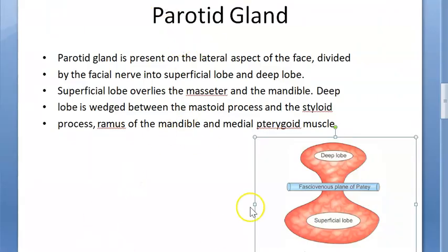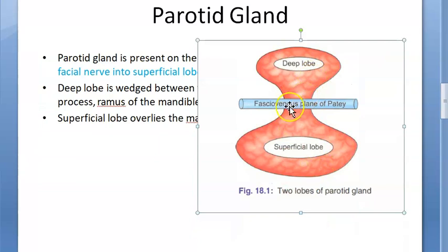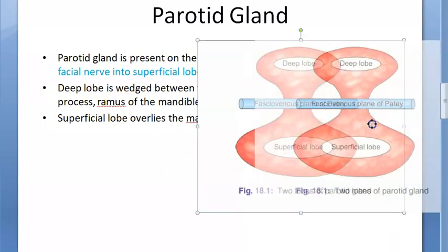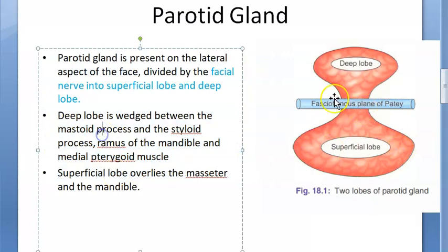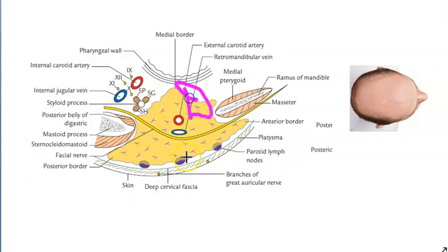The parotid gland has a superficial lobe and a deep lobe. It is the facial nerve itself that divides the parotid gland into these two lobes — this is called the fasciovenous plane of Patey. The deep lobe is wedged between the mastoid process, the styloid process, the ramus of the mandible, and the medial pterygoid muscle.